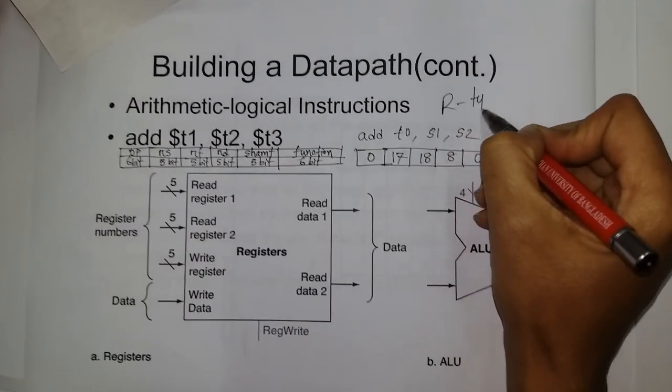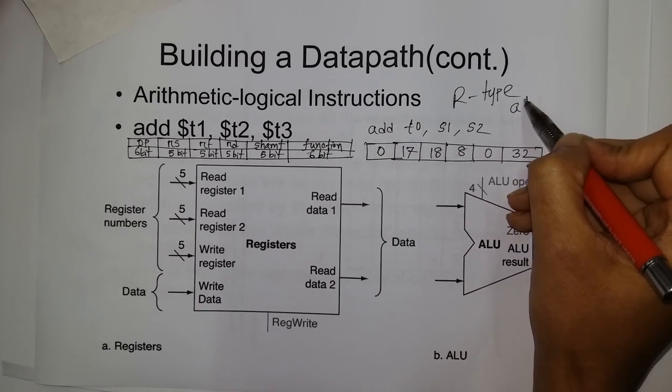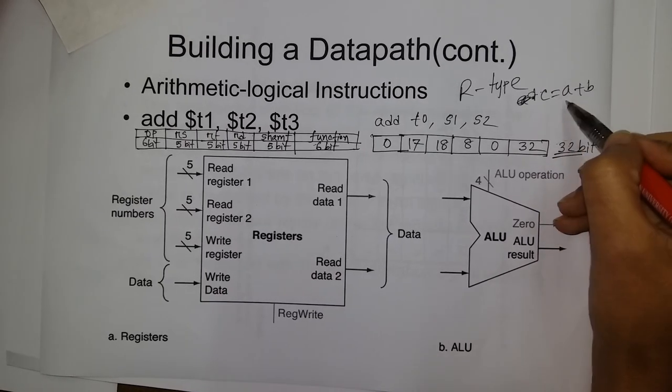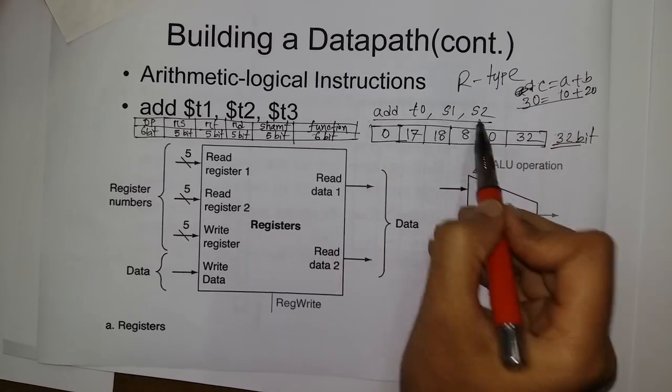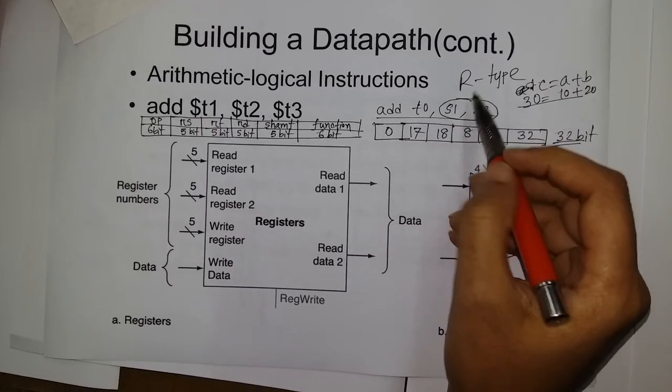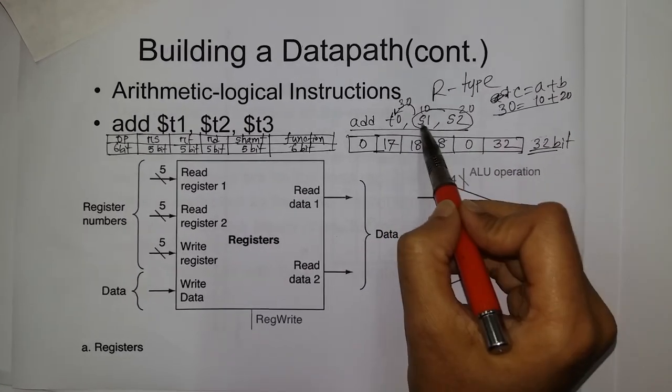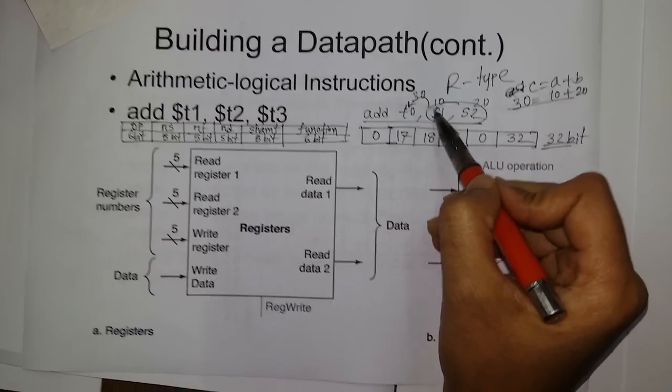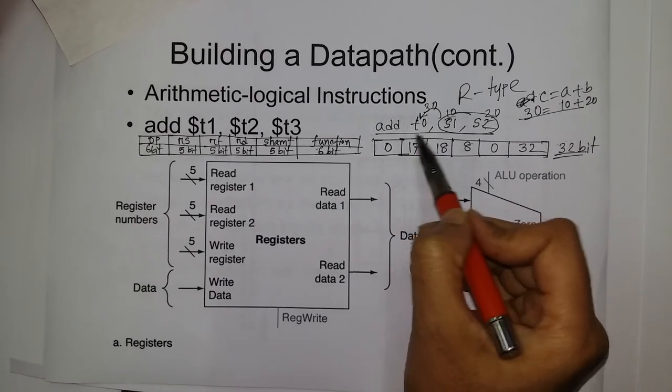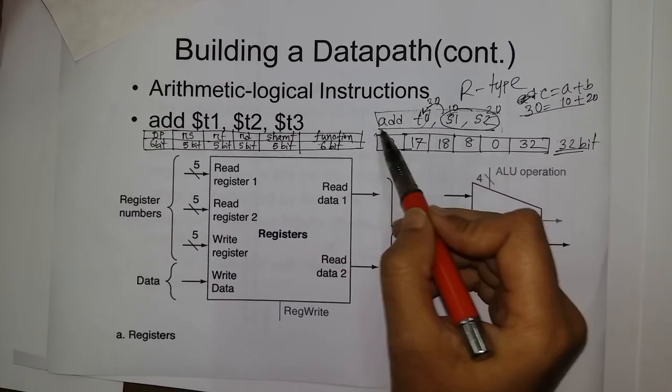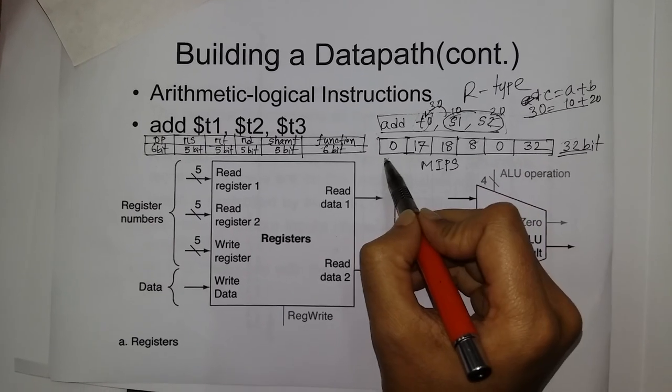The add instruction is an R-type 32-bit instruction. Add means c equals a plus b. Here, the value of a is 10 and the value of b is 20, so c will be 30. The equivalent assembly code uses registers: register source contains 10 and 20, and register destination will contain 30.